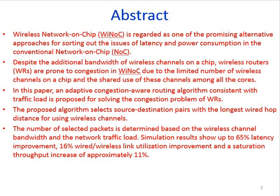Wireless network on chip is regarded as one of the promising alternative approaches for sorting out the issues of latency and power consumption in the conventional network on chip. Despite the additional bandwidth of wireless channels on chip, wireless routers are prone to congestion in the wireless network on chip due to the limited number of wireless channels and the shared use of these channels among all the cores. An adaptive congestion-aware routing algorithm consistent with traffic load is proposed for solving the congestion problem of wireless router in this paper.